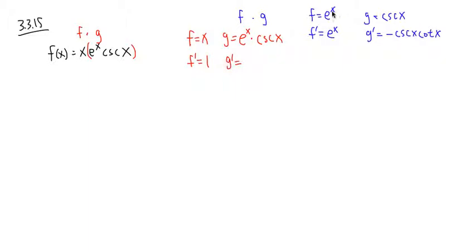So to figure out g prime in red, I will take this e to the x, pair it up with g prime right here, which is this. So e to the x times negative cosecant x cotangent x, it will be, let me put a negative first, and then put down the e to the x right here.